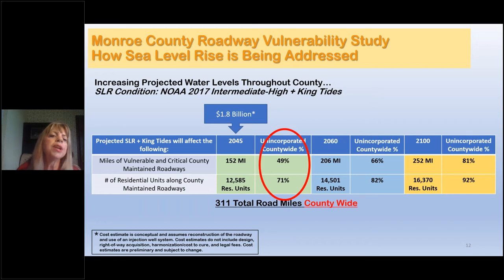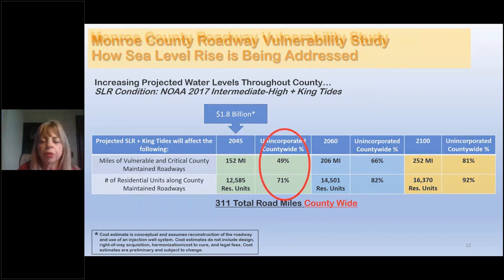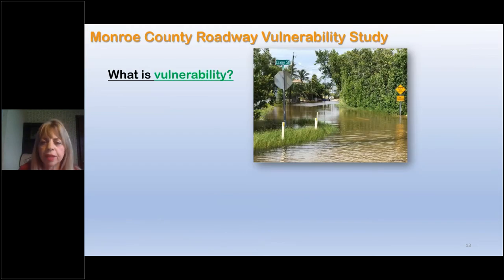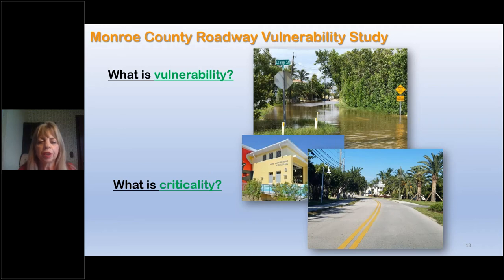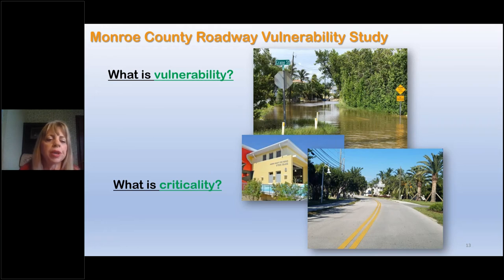When looking at vulnerability, you're looking at what's caused by the environment — things like sea level rise. When we look at criticality — what I call the people factor — we look at how that road is critical and how humans are using it: Are there fire stations or hospitals? Is it an evacuation route? How many people are on it? These are the two sets of criteria that we looked at as we developed our roadway elevation capital infrastructure plan.